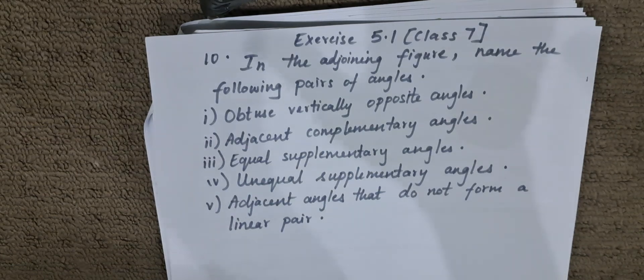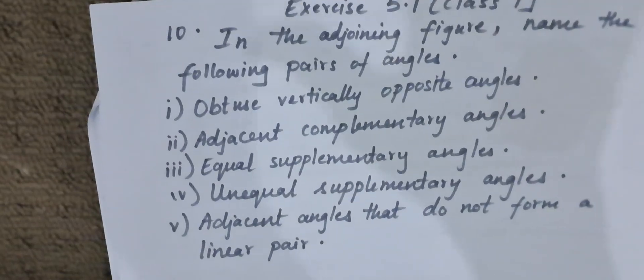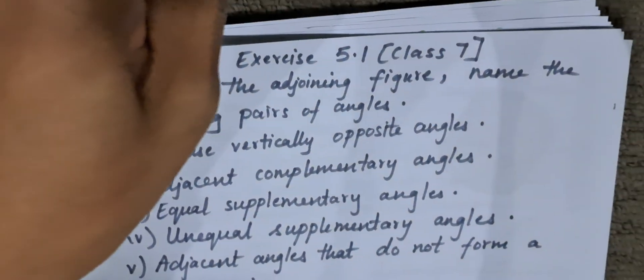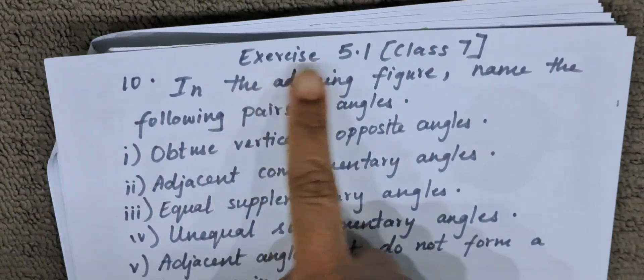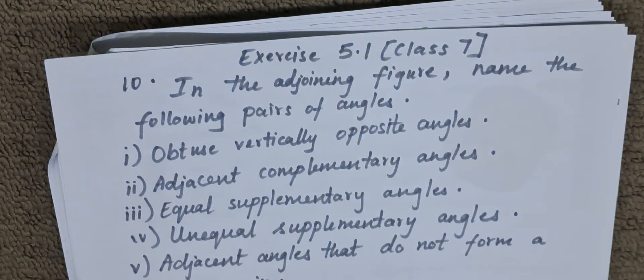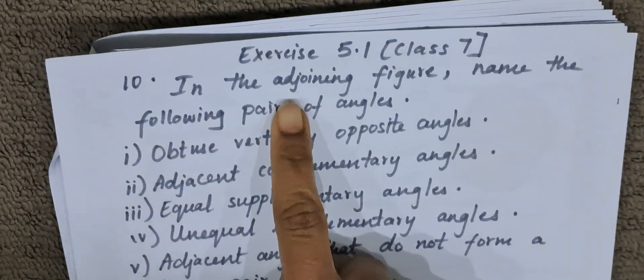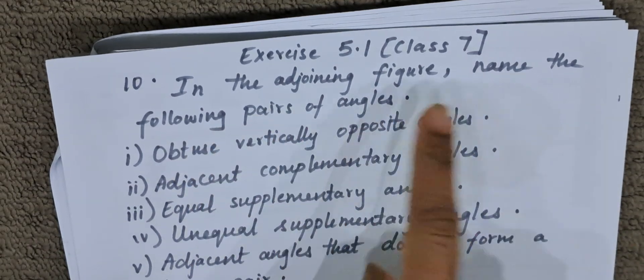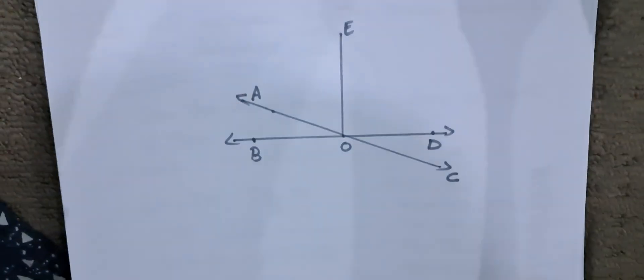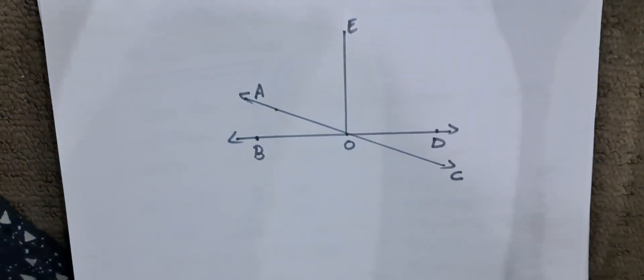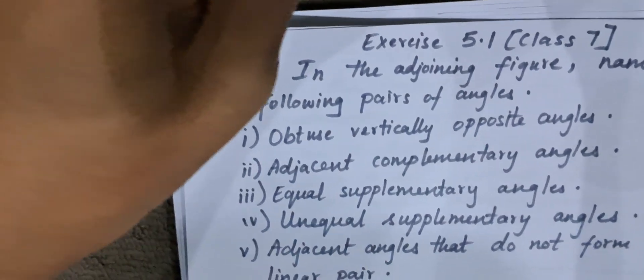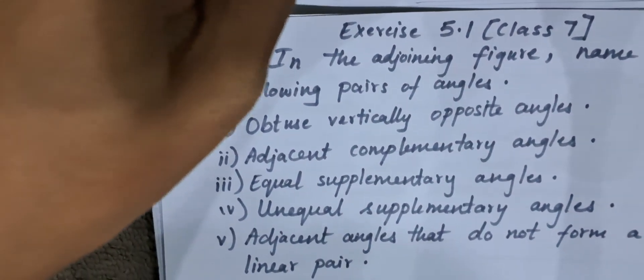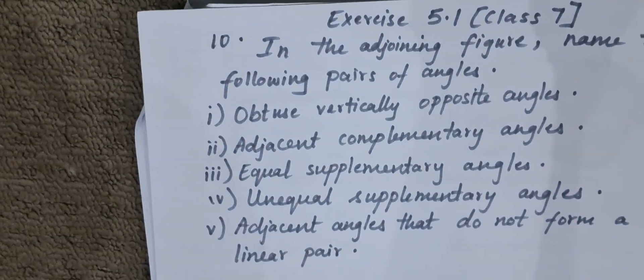Hello everyone. Today we are going to do question number 10 of exercise 5.1, class 7. The question goes like this: in the adjoining figure, name the following pairs of angles. They have given us a figure and are asking us to find some pairs of angles.